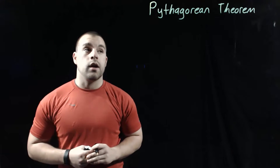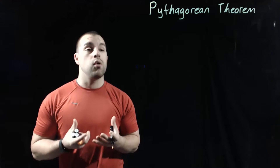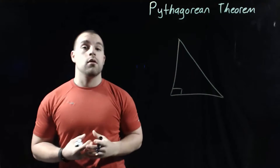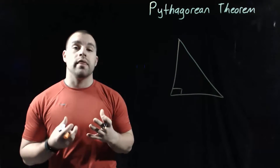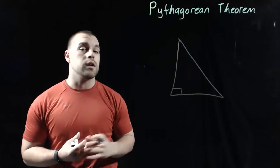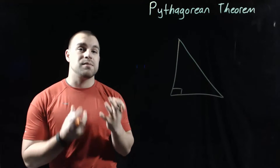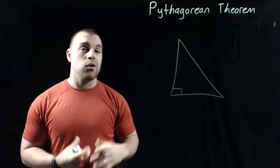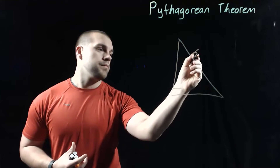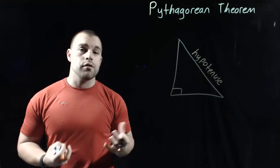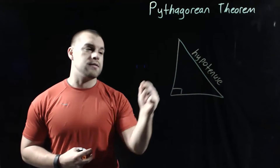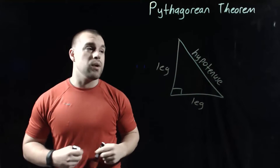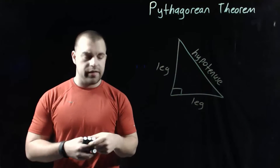When we're using the Pythagorean Theorem, we're specifically talking about right triangles. The Pythagorean Theorem is a relationship between the lengths of sides within a right triangle. Remember, we've got some special names for some of these sides of our right triangle, specifically the one across from the right angle — we call that the hypotenuse. And the other sides of our right triangle are just called legs.